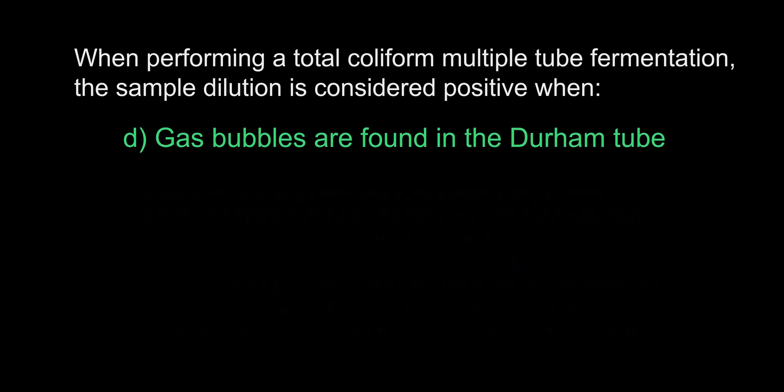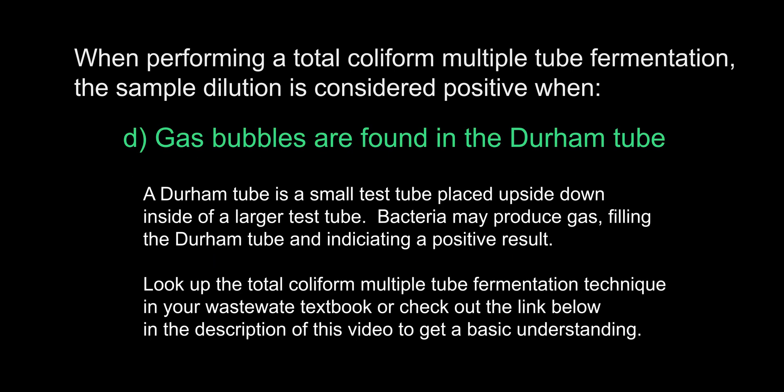The answer is D — gas bubbles are found in the Durham tube. A Durham tube is a small inverted tube placed in a larger test tube filled with nutrient media to capture any gas produced by the growth of bacteria in the multiple tube fermentation method. I have placed a link to a video that will give you a general idea of what this method is like. I recommend using a wastewater textbook to learn more about total coliform multiple tube fermentation, as there is quite a bit to review on this topic that is outside the scope of this video.